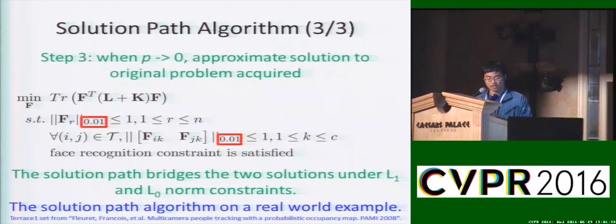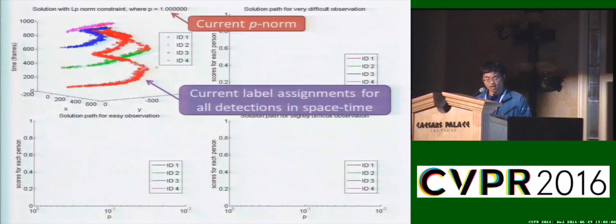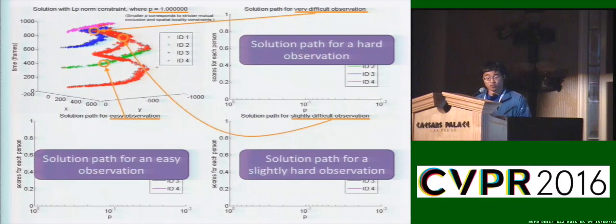Now, let's see a real-world example. Shown in the upper left are the current label assignments for all person detections in space-time given the current P norm constraint, which is currently 1. The remaining three blocks correspond to the solution path for three separate person detections.